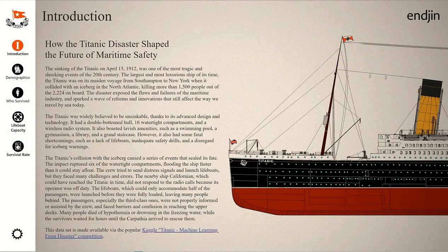The introduction screen gives a brief outline of the report, showing what it covers and how the disaster changed the future of maritime safety. We outline the report structure and highlight how there were not enough lifeboats to save all on board. We also talk about the role of the ship Carpathia, which arrived to rescue the survivors.